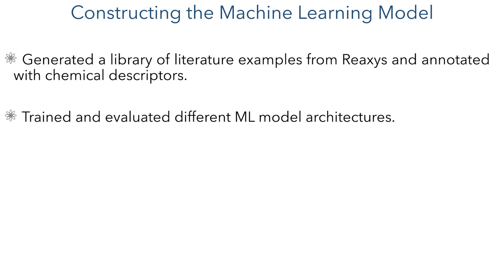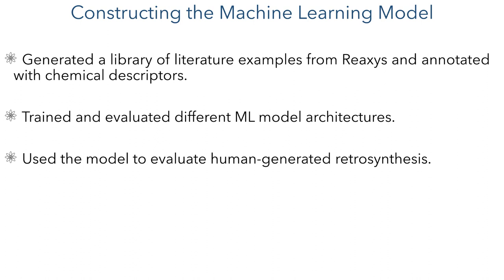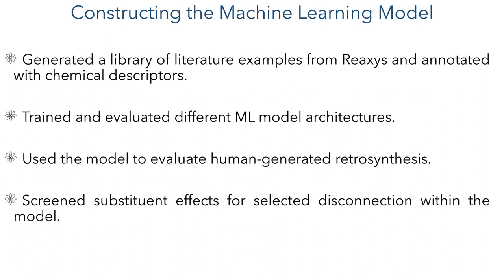Once the optimal machine learning model was identified, they then applied it to human-generated retrosyntheses to assess which route was likely to be more successful. Once the optimal disconnection was identified, they could then computationally screen different substituent effects to further optimise the reaction.